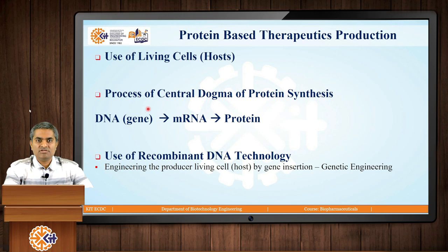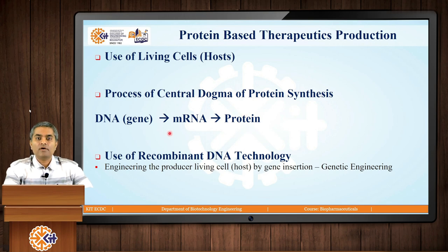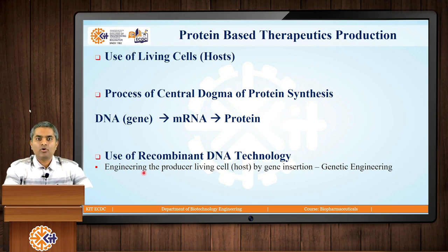From the knowledge of molecular biology, we know the central dogma of protein synthesis. Any protein in any cell, when synthesized, comes from the route of DNA — that is a gene — to messenger RNA, the process called transcription. From messenger RNA, the protein is finally synthesized in a process called translation. By the expression of proteins, these processes are carried out inside the cells when we try to express our protein drug of interest. These proteins are not native proteins, but the use of recombinant DNA technology is involved whenever there is a biopharmaceutical production. Recombinant DNA technology can also be called genetic engineering, where these producer living cells or hosts are modified by the insertion of the gene of interest.